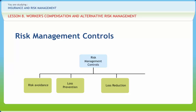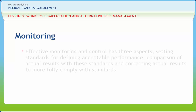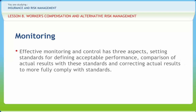An example of separation or diversification is the development of an organized approach by a facility to handle the workers' compensation program, including committees, incident investigations, light duty positions, and working with medical and legal personnel. Additionally, utilization of non-insurance transfers can rid the organization of any responsibility for the loss. After the selection and implementation of risk management techniques, certain general results such as reductions in losses or insurance premiums are expected. Techniques to monitor the results are imperative. Effective monitoring and control has three aspects: setting standards for defining acceptable performance, comparison of actual results with these standards, and correcting actual results to more fully comply with standards.